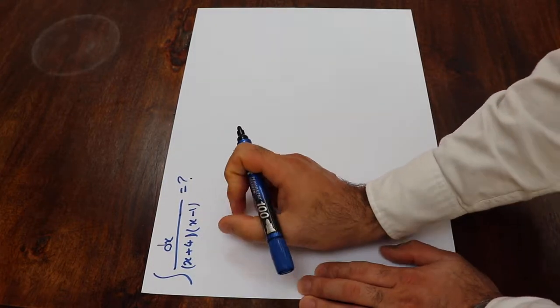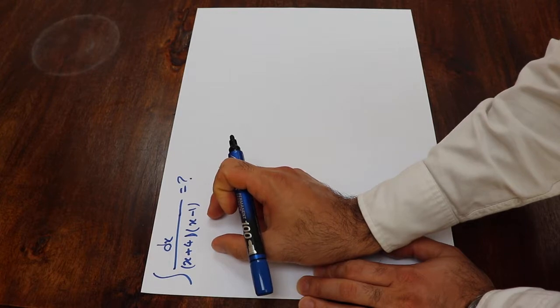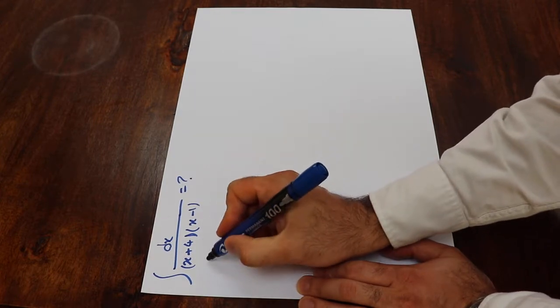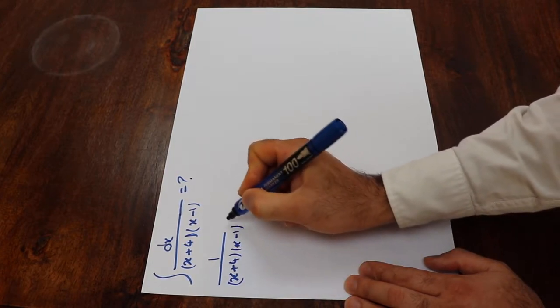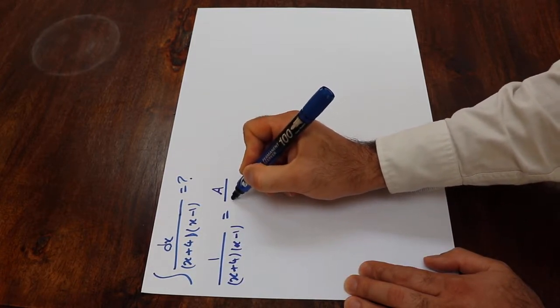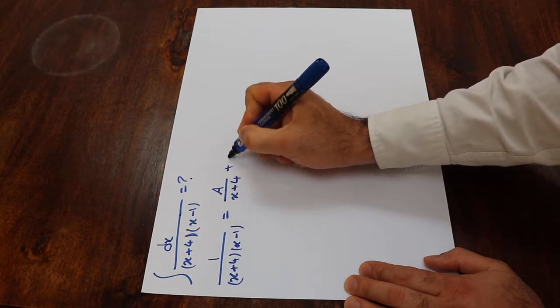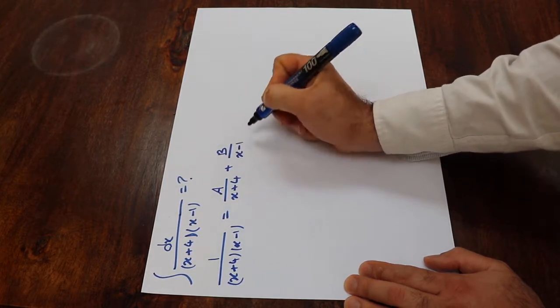To solve this integral, you have to first express this rational function as the sum of partial fractions, that is 1 divided by x plus 4 times x minus 1 will be equal to a divided by x plus 4 plus b divided by x minus 1.